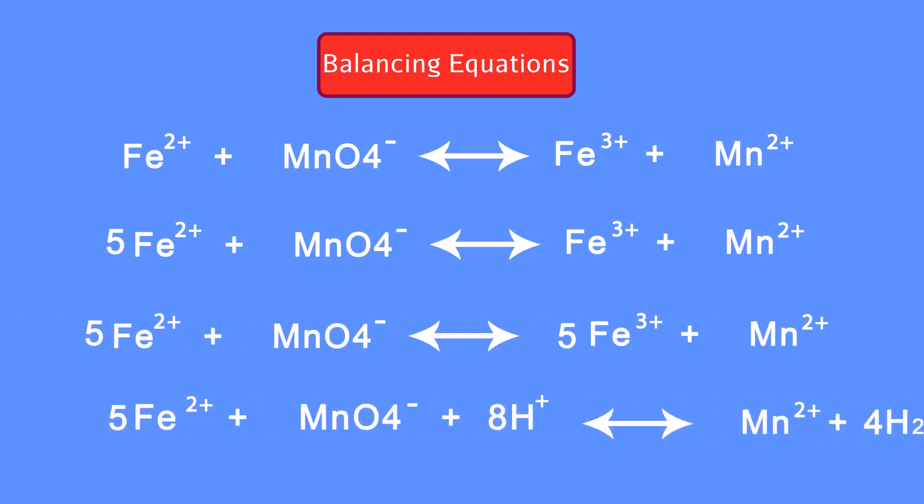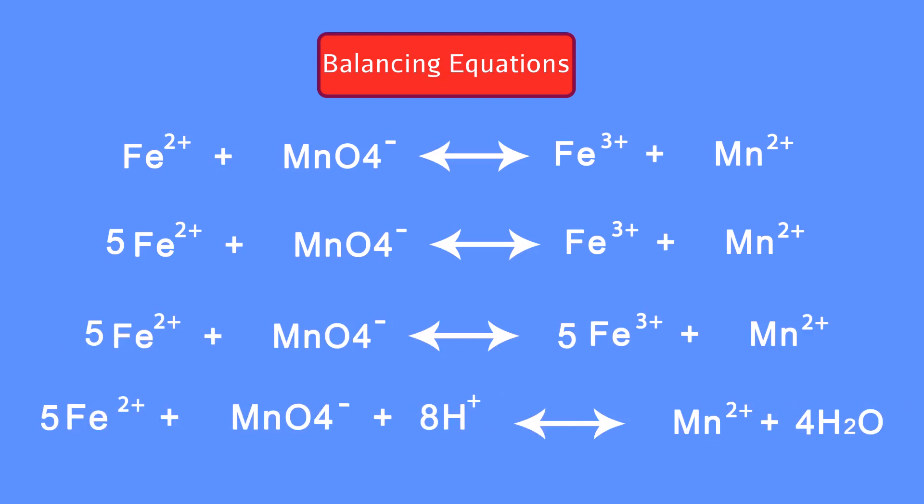Five: balance oxygen and hydrogen by adding H positive or H negative and then H2O. Six: verify that both sides contain the same types and numbers of atoms and have the same net charge.